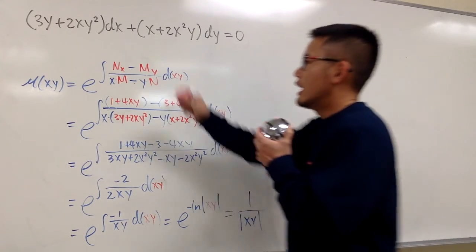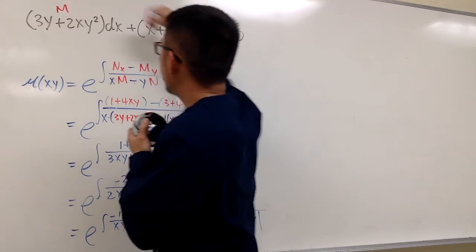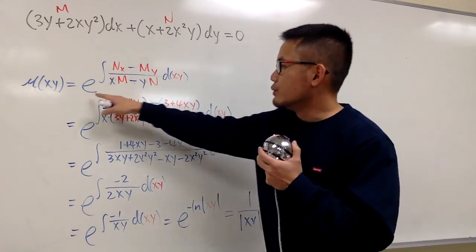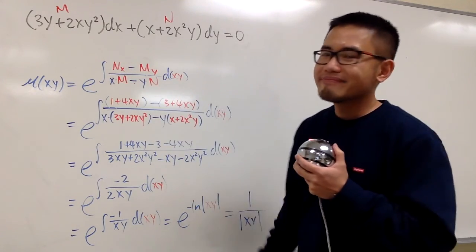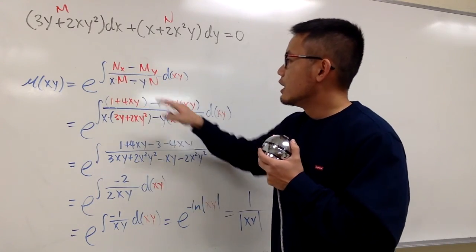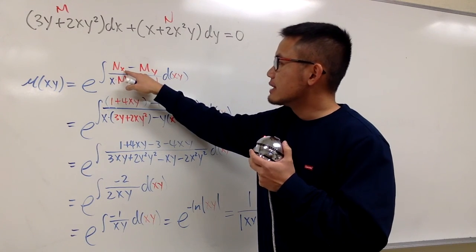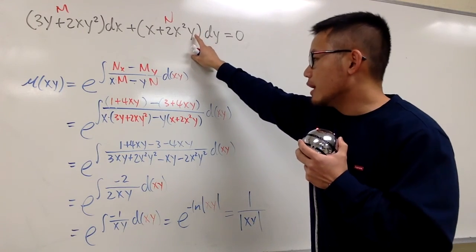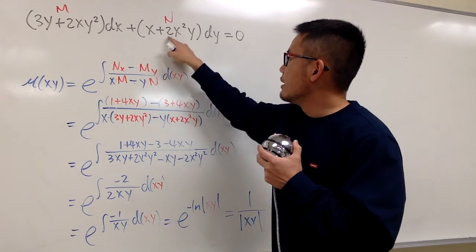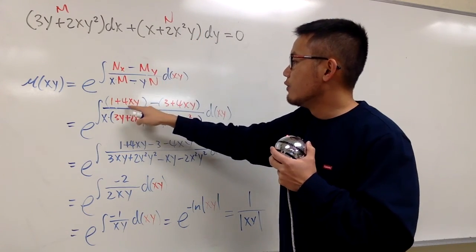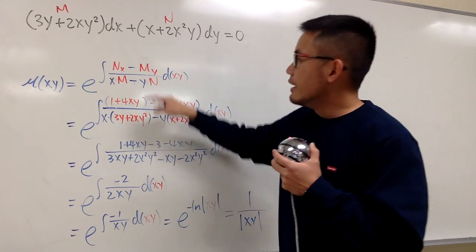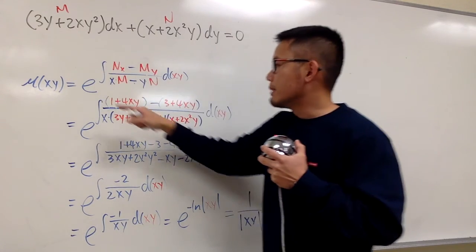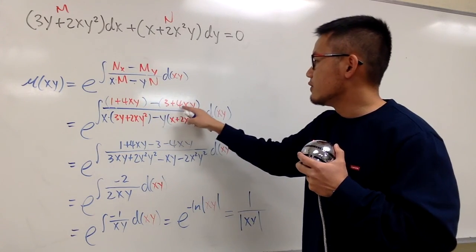Let's go ahead and do the work. I will first label this as M and label this as N. The formula says we have to do e to this power, and the power is an integral. So let's focus on this first. We have to do N sub x — that's the partial of N with respect to x. We differentiate with respect to x and we get 1, and the next term is plus 4xy. Then we do minus M sub y: differentiate with respect to y, and we get 3 plus 4xy.